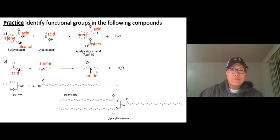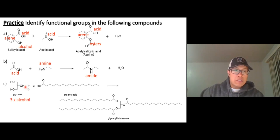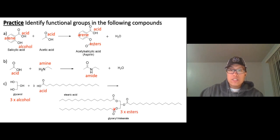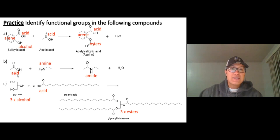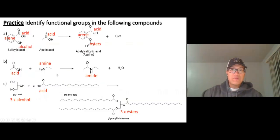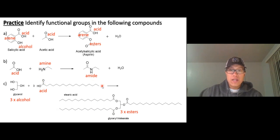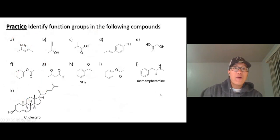C double bond O and N — that's an amide. Now we have three alcohols and three carboxylic acids, giving one, two, three ester groups. You should know: amide is half carboxylic acid and half amine reacting together. Ester comes from carboxylic acid and alcohol — the C double bond O and carbon chain come from the acid, and the oxygen comes from the alcohol.